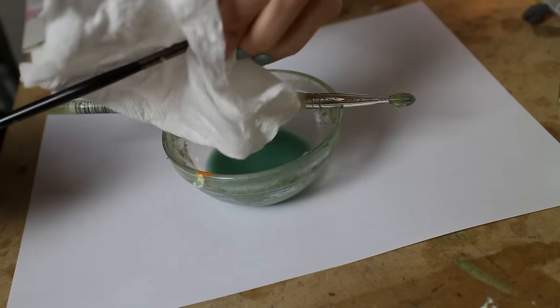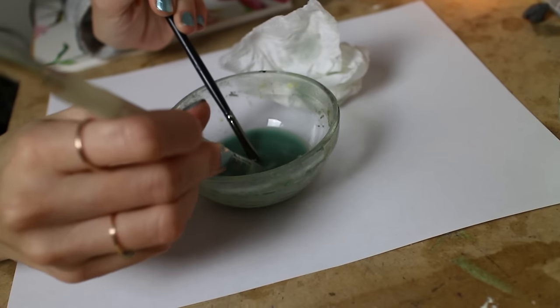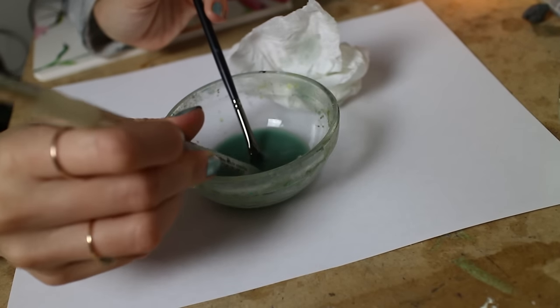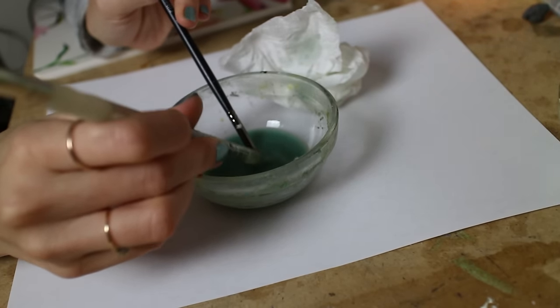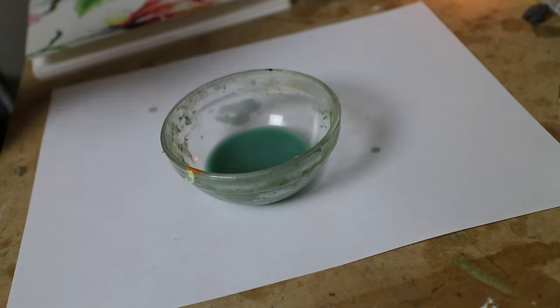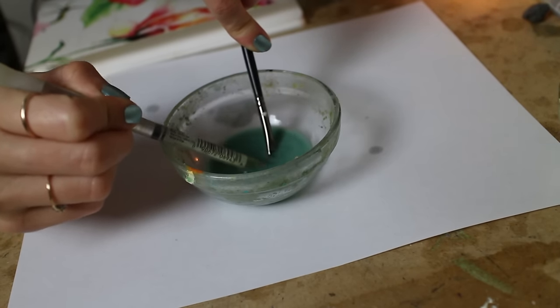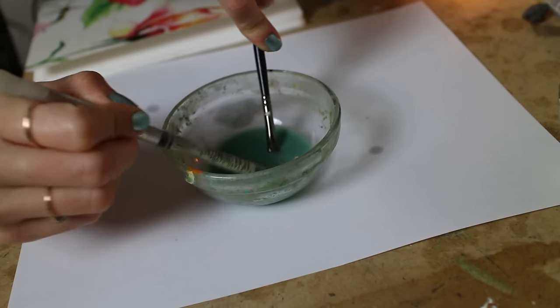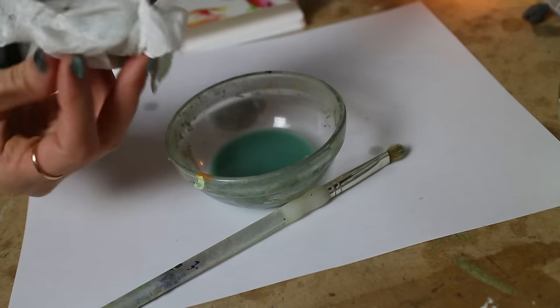So I just repeatedly wiped it on a paper towel and I also used this end of another paintbrush to get some of the paint off of the bristles. I wiped it on a paper towel again and then I repeat that process until it looks like all the paint is off of the brush.